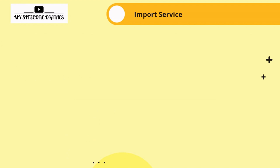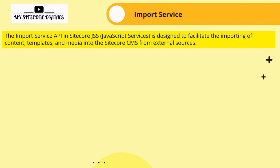Now we will talk about another powerful feature — the Import Service. The Import Service API in Sitecore JSS is designed to facilitate the importing of content, templates, and media into the Sitecore CMS from external sources. This can be a time-saver when migrating or integrating with other systems.